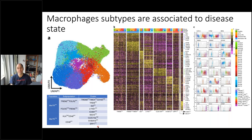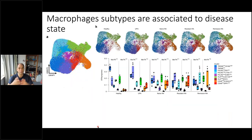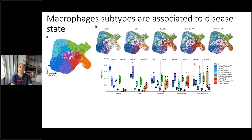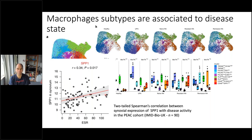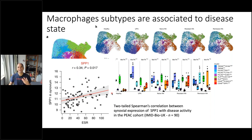Looking at the distribution across five different phenotypes, the blue 'good' macrophages occur more often in healthy individuals and early arthritis (EUPI), while the red SPB1-inflammatory macrophages are more abundant in disease. You can see the abundance of different populations relative to each other differs between patients. We also looked at the P-cohort — an IMIT-Bio clinical cohort — and found a correlation between inflammation and SPB1 in the synovium. In clinical studies, this is a quite nice correlation, suggesting our macrophage classification correlates with specific disease phenotypes.